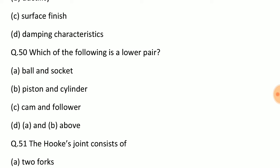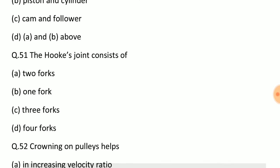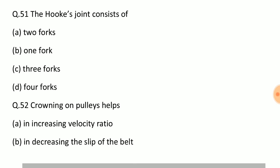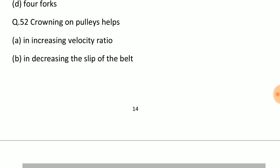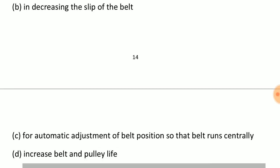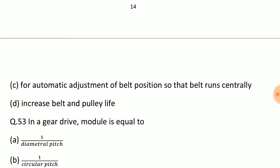Question: Which of the following is a lower pair? Ball and socket is a lower pair. Piston and cylinder is a lower pair. Answer: Option D, A and B above. Question: The Hooke joint consists of? Answer: Option D, two forks. Question: Crowning on pulleys helps? Answer: for automatic adjustment of belt position so that belt runs centrally.